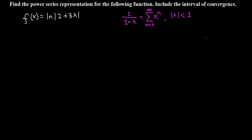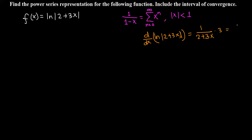Whenever we have a fraction of the form 1 over 1 minus x, we can write the corresponding power series. Since our problem involves natural log of 2 plus 3x, and we know we can differentiate or integrate power series term by term, let's find the derivative of natural log of 2 plus 3x. The derivative is 1 over (2 plus 3x) times 3, which gives us 3 over 2 plus 3x.